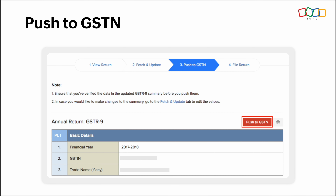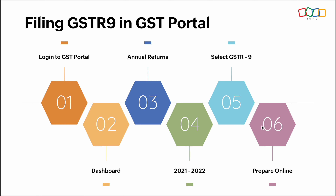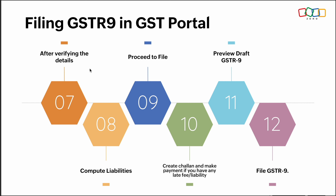First, we need to verify and file this return in the GST portal before marking it in Zoho Books. Log into your GST portal, go to Dashboard, click on Annual Returns, select the filing period, select GSTR 9, and choose Prepare Online. After verifying the details, compute the liabilities. Then proceed to file your return — create a challan and make the payment if you have any late fee or liability.